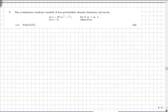In question 7 we are asked to find the expected value of x for the probability density function, which we should know by now is the integral between 0 and 1 of 20 x cubed minus x to the 4 times x dx.